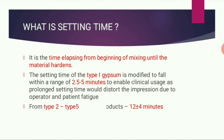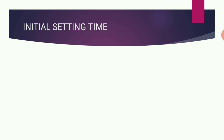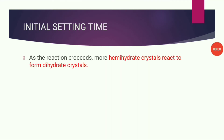From Type 2 to Type 5 gypsum products, the setting time is 12 ± 4 minutes. Setting time can be classified into initial setting time and final setting time.